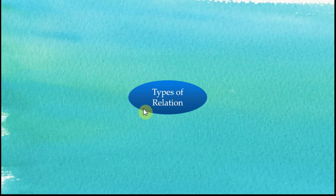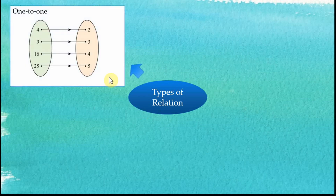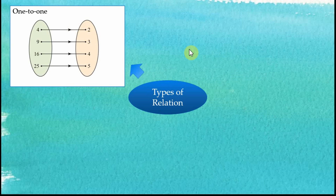Types of relations. There are four types of relations. The first one is called the one-to-one relation. For one-to-one relations, every object is only mapped to one image, and every image has only one object. This kind of relationship is called one-to-one: one object to one image.